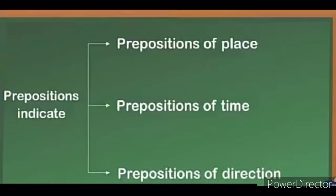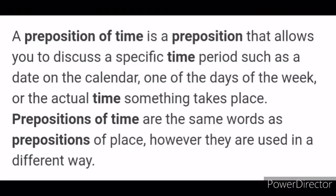To understand it much more nicely, we will learn the definitions one by one with examples. A preposition of time is a preposition that allows you to discuss a specific time period — such as a date on the calendar, one of the days of the week, or the actual time something takes place. Prepositions of time are the same words as prepositions of place; however, they are used in a different way.